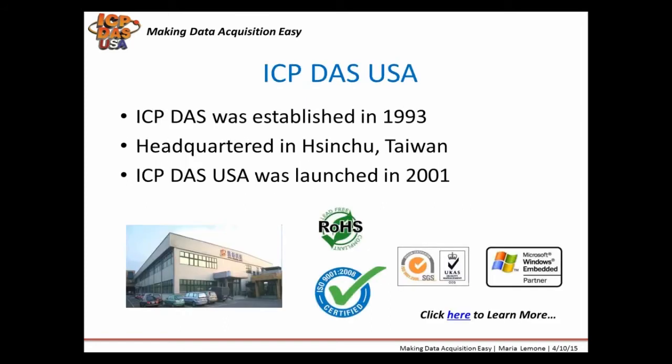ICP-DAS was established in 1993. Our headquarters is located in Hsinchu, Taiwan. ICP-DAS USA was launched in 2001 to support the North and South American markets. We have over 100 R&D engineers and work closely with them to add new features to our products, develop new products, and to support our customers. For large projects, they have come out to help when needed with programming services and firmware modifications.